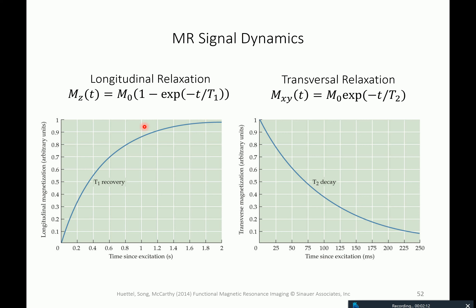The equation is M0 times one minus the exponential of t divided by T1, where M0 and T1 are both constants. If you plot this in Python or MATLAB you get this graph, which describes the rebuild of the longitudinal component of the net magnetization. The other process of interest is the decay — an exponential decay that describes the length of the net magnetization in the xy plane, encoded either as a 2D vector norm or as the absolute value of a complex number.